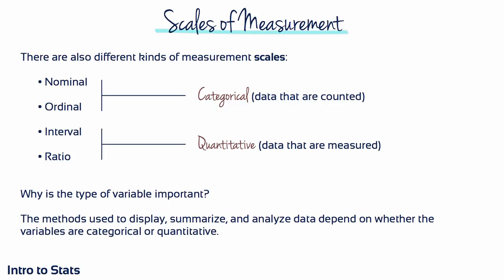Data collection requires that we make measurements. Measurement involves assigning individuals or events to categories — the categories can simply be names, such as male or female, or employed and unemployed, or they can be numerical values such as 68 inches or 175 pounds. The complete set of categories makes up a scale of measurement, and the relationships between the categories determine different types of scales. These distinctions are important because they identify limitations of certain types of measurements, and because certain statistical procedures are appropriate for data collected on some scales but not others.